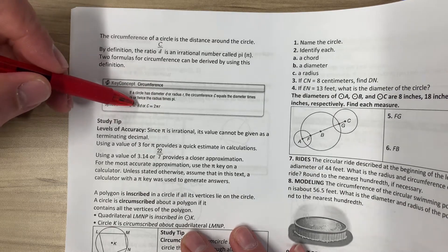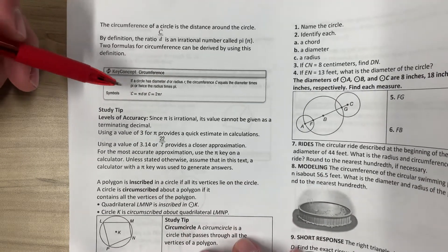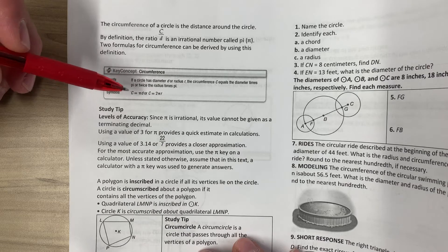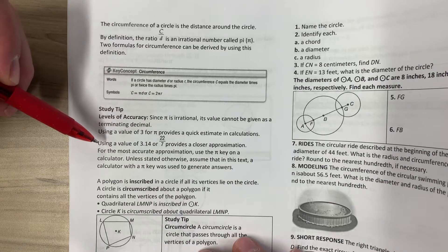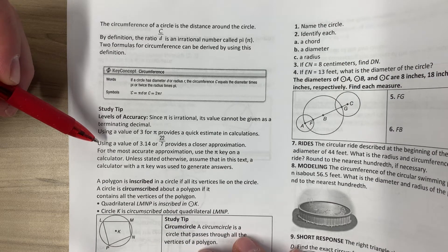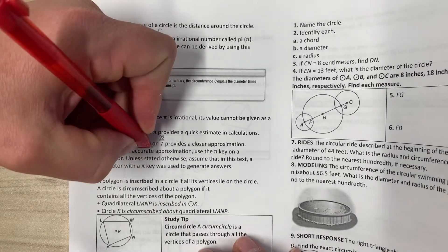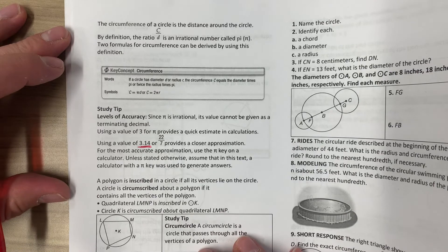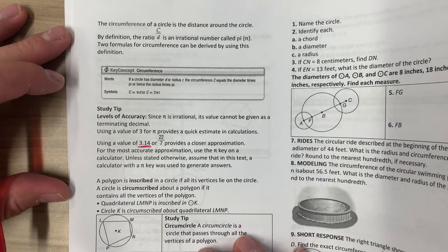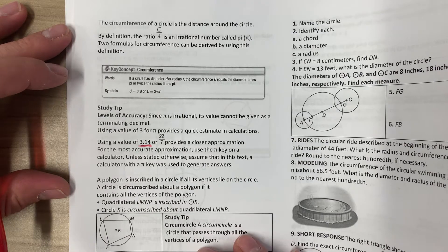Depending on what they give us, either the diameter or the radius, determines which formula we use. Since pi is irrational, its value cannot be given as a terminating decimal. Using a value of 3 for pi provides a quick estimate in calculations. Using a value of 3.14 or 22 over 7 provides a closer approximation. This is the approximation you'll use for me, 3.14. For the most accurate approximation, use the pi key on the calculator. Assume that in this text, a calculator with a pi key was used to generate the answers.